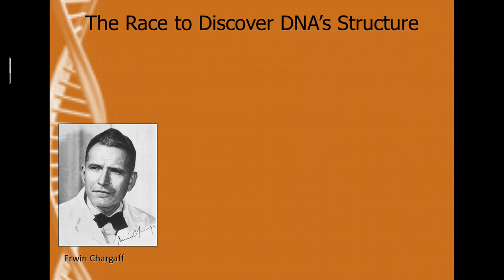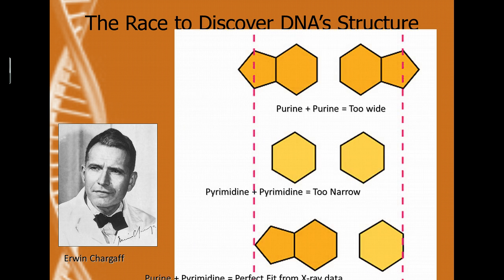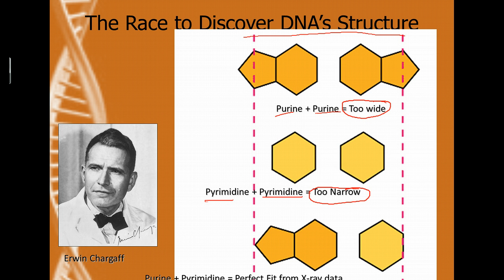We can understand why these bases go together the way they do based upon the structure of DNA. DNA has a definitive diameter. If two purines go together, the DNA would be too wide. If you had two pyrimidines together, it would be too narrow. But just like Goldilocks and the three bears, if you have a purine and a pyrimidine — an A with a T or a C with a G — it's going to be a perfect fit, making that perfect diameter of DNA.